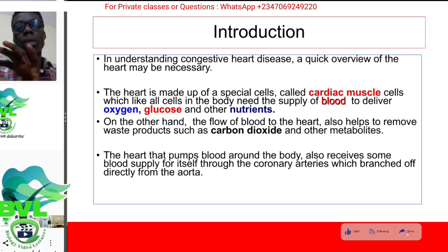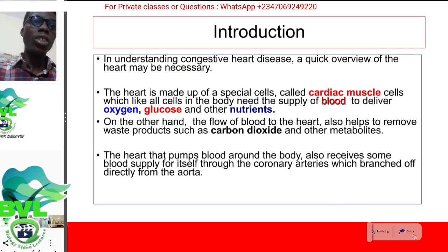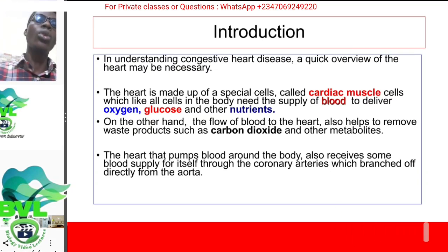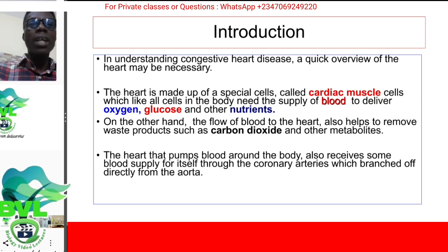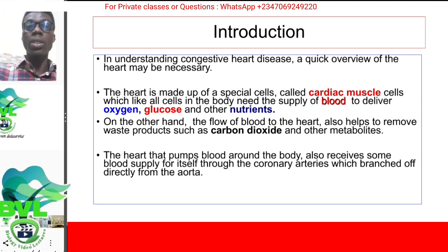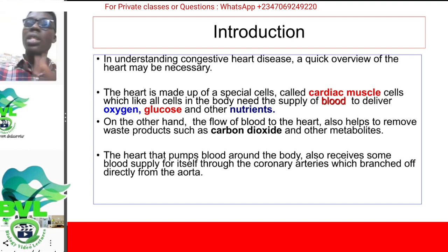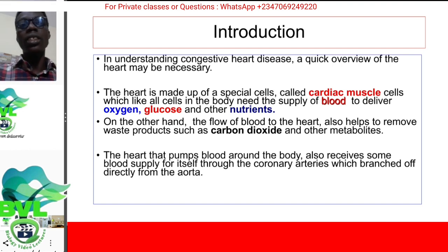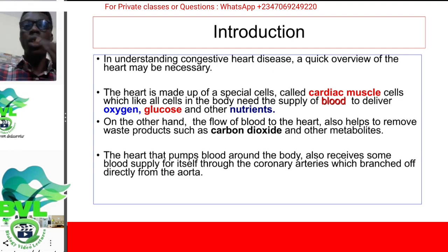Before we go on to talk about coronary heart disease, it might be essential to quickly go over some few things. Now the heart is a special organ — it's made up of cardiac cells, which are muscle cells that contract without getting fatigued. Now it needs oxygen, glucose, and other nutrients.